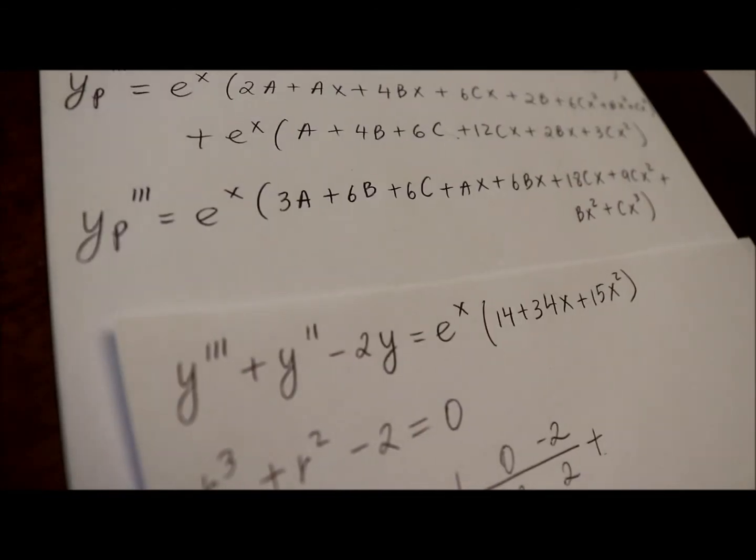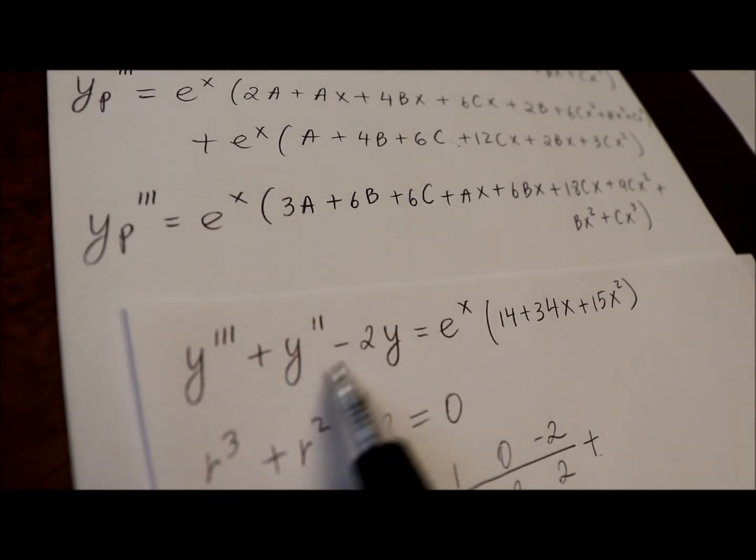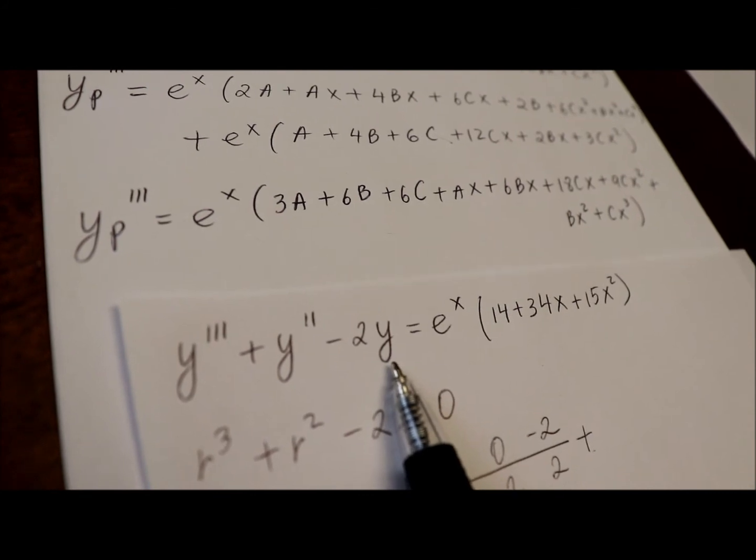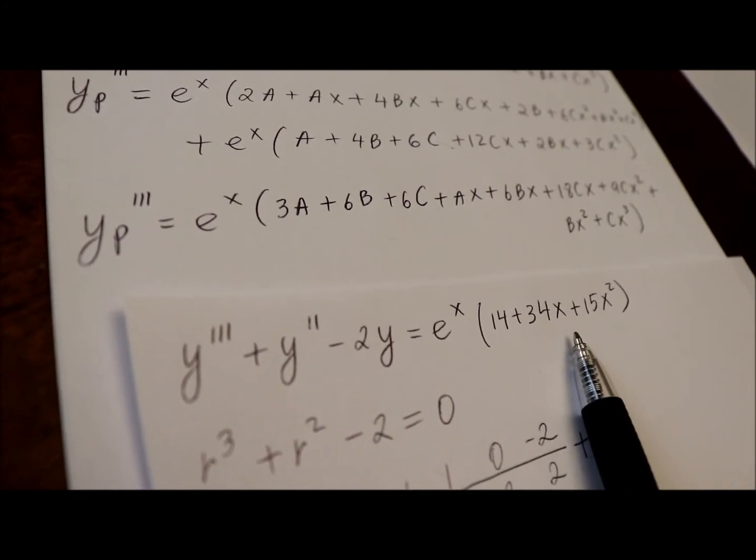Now, the next step will be substituting all three derivatives in our original equation. Remember, we had third derivative plus second derivative minus 2 times our function y equals this. So, what I'm going to do,